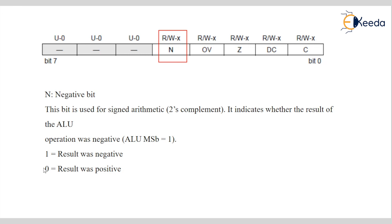So students, this Status Register is bit-addressable. It is readable and writable. We can set or clear it by giving some condition; we can observe and modify these flags. That is why it is called bit-addressable — a single bit can be used in an instruction for set and clear. Thank you, students.